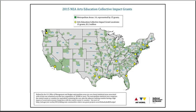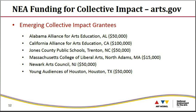Through two rounds of FY15 funding, the agency has awarded 15 collective impact grants, both emerging and sustaining. This map gives you an idea of where collective impact grantees are located — the yellow dots represent the 15 grantees and give you a sense of the geographical diversity of these projects. There are six emerging collective impact projects listed on this slide, and I want to talk briefly about the insights from these groups of projects.